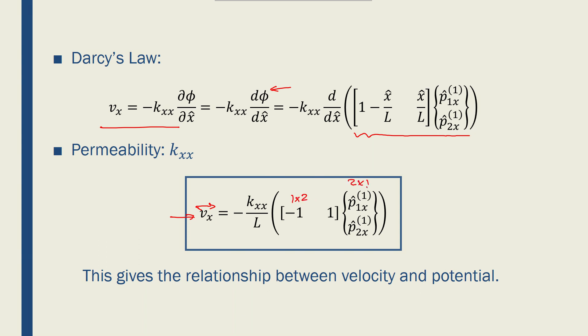If we multiply, we'll have the 1 by 1 scalar, which is the element velocity. And element velocity in 1D fluid flow is equal or equivalent to stresses in structural analysis.